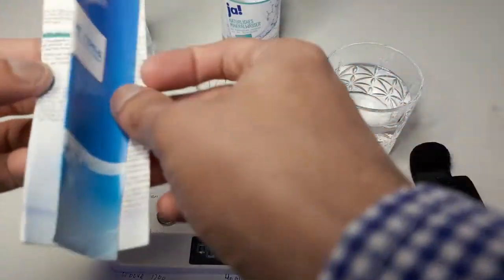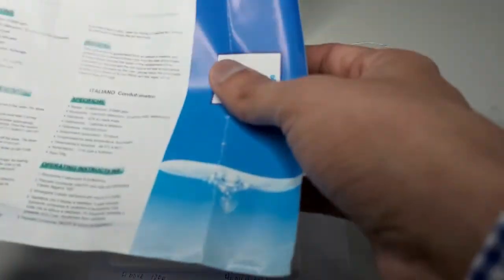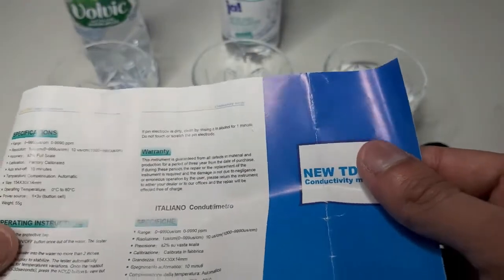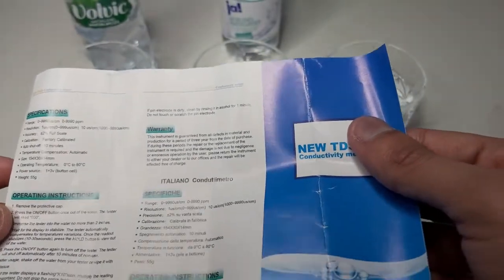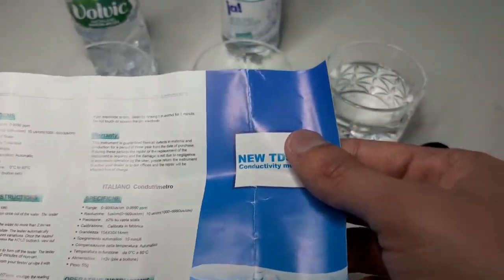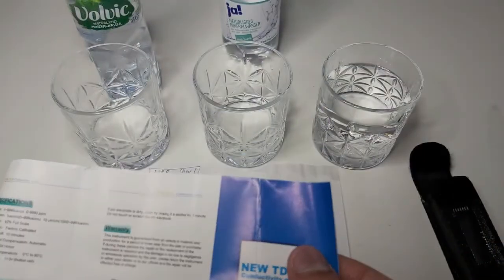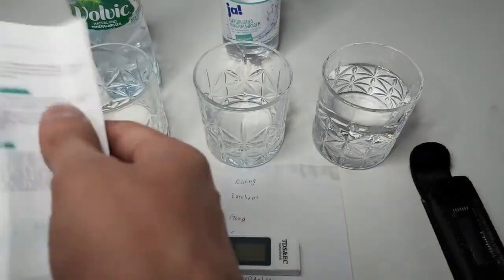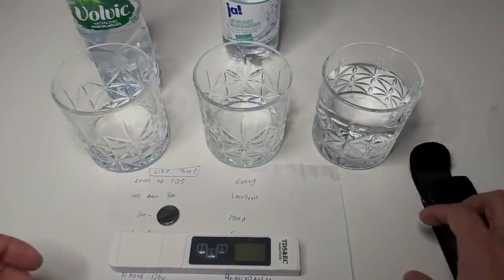Lastly, the user manual. The user manual is available in English language and two more languages. First of all we will see in English language: specifications, operating instructions, maintenance and warranty. Then the Italian language and lastly the German language. So let's put it aside.